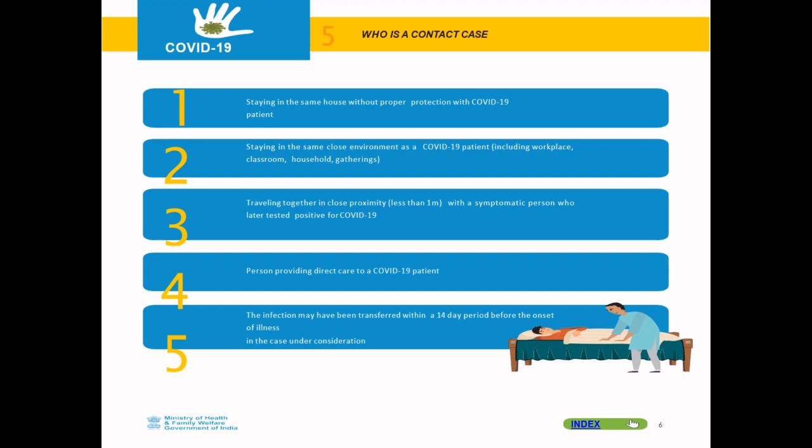Who is a contact? A contact can be a person staying in the same house without proper protection with a COVID-19 patient, or staying in the same close environment such as a workplace, classroom, household, or gatherings. Or someone traveling in close proximity — less than 1 meter — with a symptomatic person who later tested positive for COVID-19. Also, a person providing direct care to a COVID-19 patient. The infection may have been transferred within a 14-day period before onset of illness.